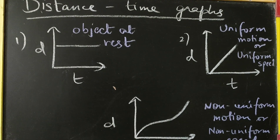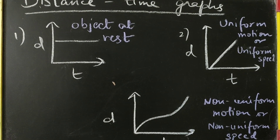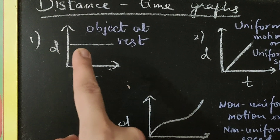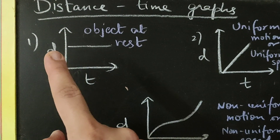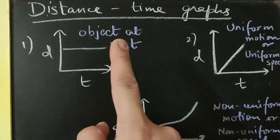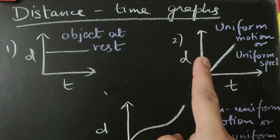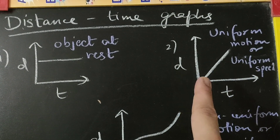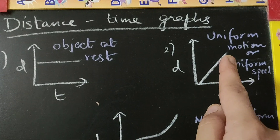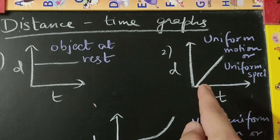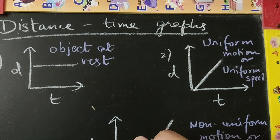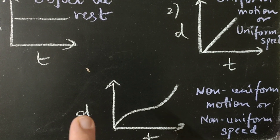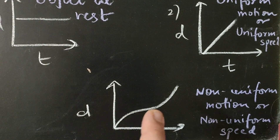So these are the 3 types of distance-time graphs we have discussed: first, object at rest — the DT graph is a straight line parallel to the time axis, showing distance is not changing with time. Second, uniform motion or uniform speed — distance is changing with time at a constant pace. Third, non-uniform motion or non-uniform speed — distance is changing with time at a non-uniform rate.